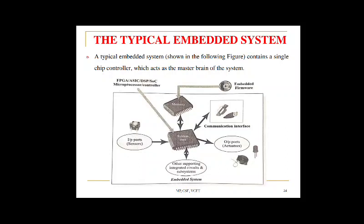Welcome to 18CS44. This is the third module on embedded computing, covering embedded system components — specifically the second chapter on typical embedded systems. In this session, we will discuss the typical embedded system, particularly the core of the embedded system. A typical embedded system contains a single chip controller which acts as the master brain of the system.